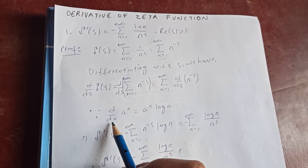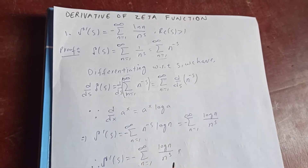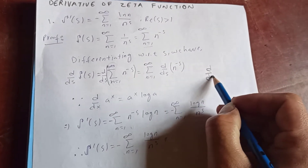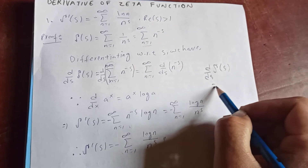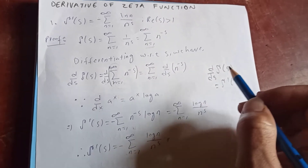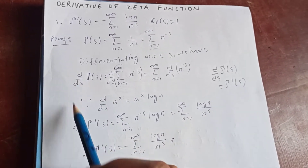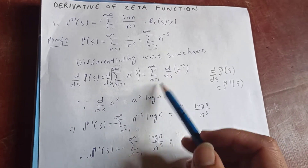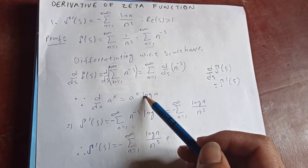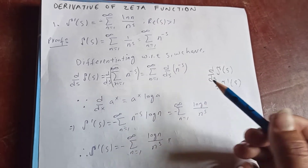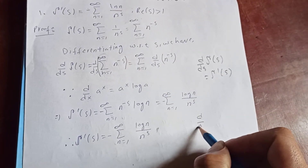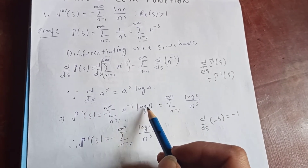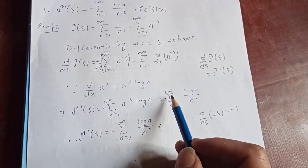This gives us the sum from n equal to 1 to infinity of d/ds of n to the negative s. We know that the differentiation of a to the x with respect to x is a to the x times log a. Using this rule, denoting the derivative as zeta prime of s, differentiating n to the negative s gives n to the negative s times log n, and the derivative of negative s is negative one, so the minus comes out.